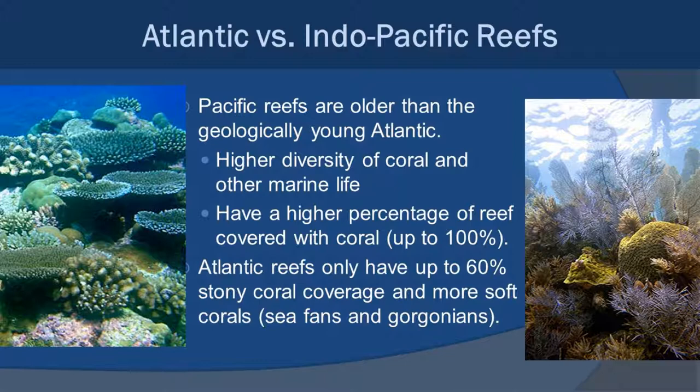If you look at global coral reefs, there are big differences between Atlantic reefs and those in the Indian and Pacific oceans. The Pacific Ocean is geologically older and has much higher diversity of corals and other marine life. The percentage coverage of actual hard stony reef-building corals can be up to 100 percent in the Pacific, whereas in the Atlantic it's more around 60 percent. The Atlantic reef picture shows hard corals but also lots of sea fans and sea whips — soft corals that add character and complexity but don't build the reef structure. The Pacific reef picture is almost 100 percent covered with hard corals.